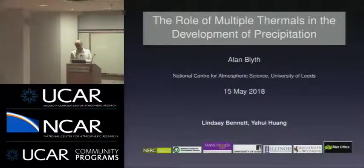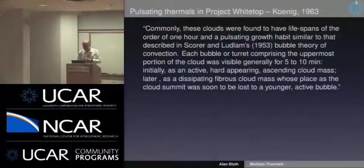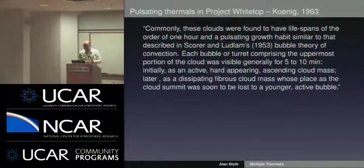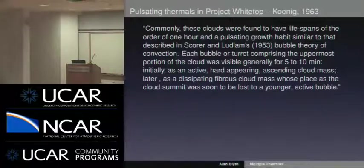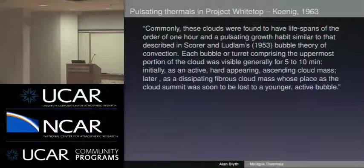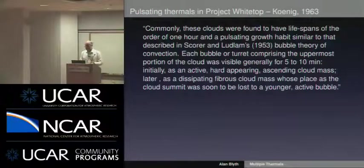I've thought about this for a long time. It's not a new idea at all. There's a really nice paper by Koenig in 1963 — 'Pulsating Thermals in Project White Top.' Commonly, these clouds were found to have lifespans of the order of one hour and a pulsating growth habit — multiple thermals, similar to that described by Scorer-Ludlam's 1953 bubble theory of convection. Each bubble or turret comprising the uppermost portion of the cloud was visible generally for five to ten minutes, initially as an active hard-appearing ascending cloud mass, later as a dissipating fibrous cloud mass, as the cloud summit was soon lost to a younger active bubble. So nothing is ever new, but this is multiple thermals and I want to explore that a little bit more.